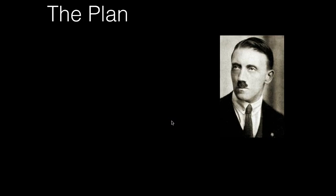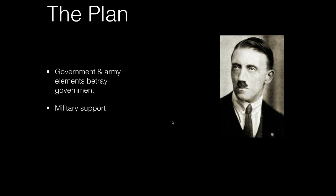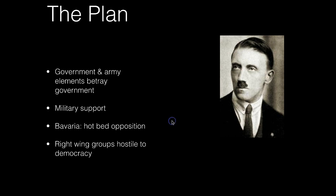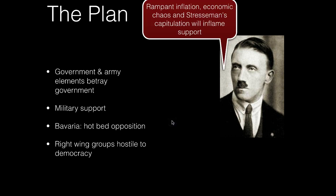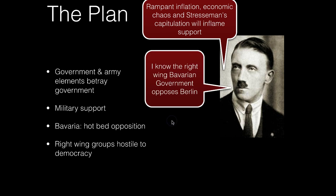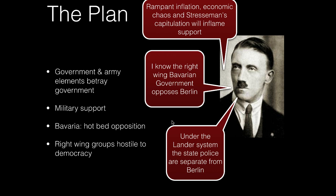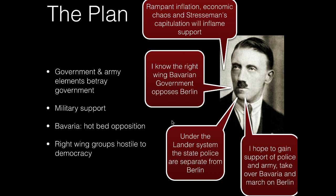The plan was to use government and army elements to betray the Berlin government, starting in Bavaria. An armed coup cannot succeed without military support. Bavaria, a southern state of Germany, was a hotbed of right-wing opposition - even within the local government. Germany had a federal structure with local governments called Länder, and the right-wing Bavarian government was actually hostile to Weimar democracy. Hitler hoped that inflation, economic chaos, and Stresemann's capitulation would inflame public support, and that Bavaria's state police - separate from Berlin under the Länder system - would also support him.